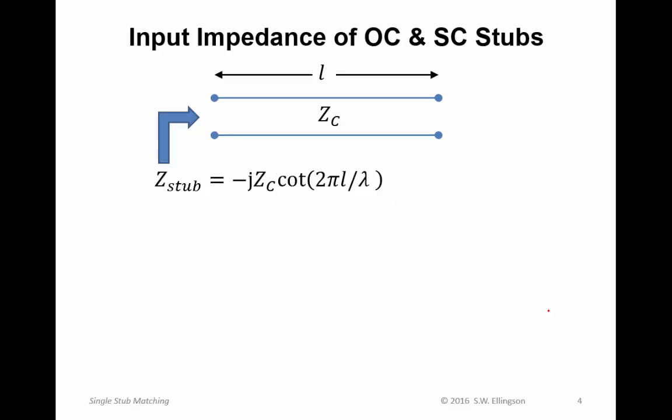Now special cases that are going to turn out to be important here are open-circuited and short-circuited stubs. Those are stubs in which the terminations are either infinite impedance or zero impedance, respectively. For an open-circuited stub, the input impedance is given by minus j times the characteristic impedance times this cotangent function, which varies as the electrical length L over lambda. We can write that in terms of admittance as well. Minus j becomes plus j, characteristic impedance becomes characteristic admittance, and we have a tangent instead of cotangent.